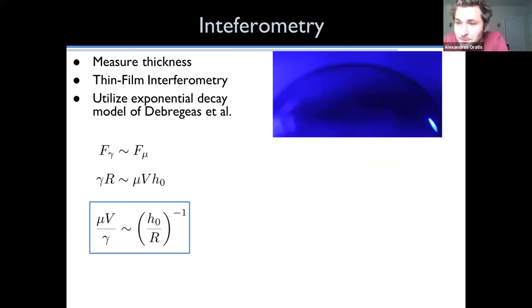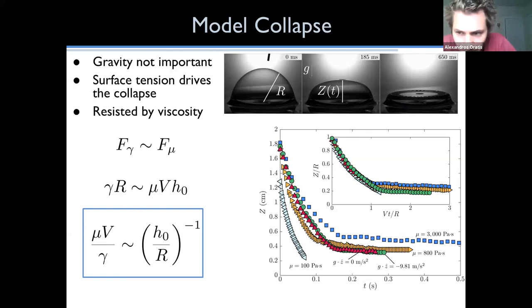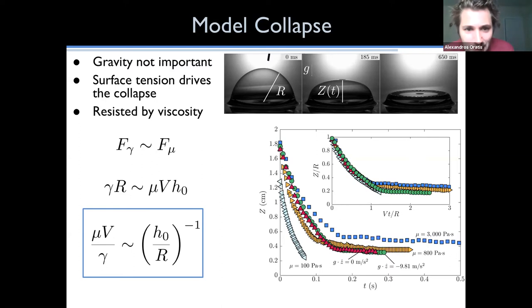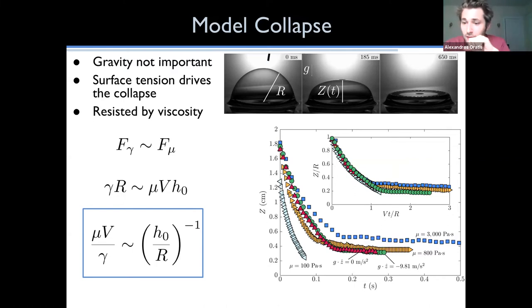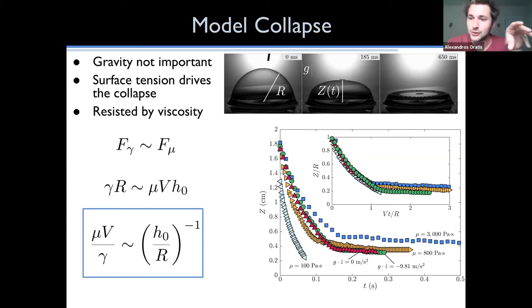A student asks how the viscous and capillary forces are conceptually applied to the bubble. Alex explains: surface tension drives the film inward. In order to drive it inward, there has to be some redistribution of the film, because the film is changing shape — its surface area is also changing. Based on this collapse and how the shape changes, there is redistribution of the film as it flows, and in that flow is where the viscous dissipation occurs.